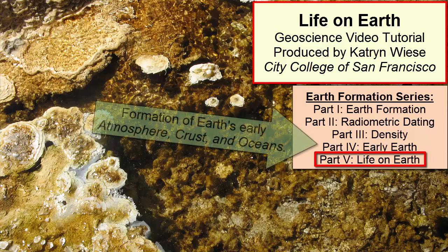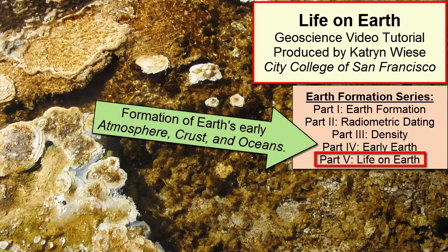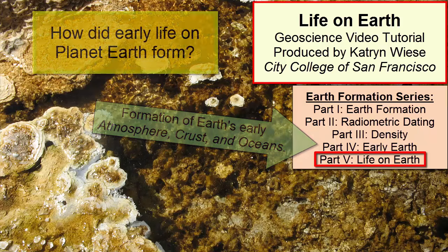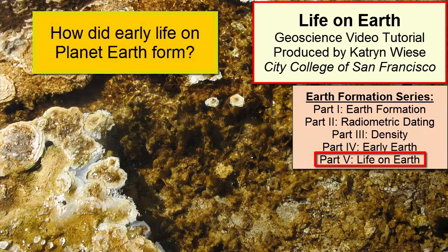After having watched the Early Earth video tutorial, we now have an understanding of how Earth's early atmosphere, crust, and oceans formed. But how about life? When did that evolve, and what was early Earth's life like?